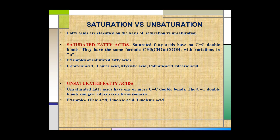On the basis of saturation versus unsaturation, fatty acids are classified into two categories: saturated fatty acids and unsaturated fatty acids. Saturated fatty acids have no double bond in their carbon chain, and examples include caprylic acid, lauric acid, myristic acid, palmitic acid, and stearic acid. Unsaturated fatty acids have one or more carbon-carbon double bonds, which can give either cis or trans isomers. Examples of unsaturated fatty acids are oleic acid, linoleic acid, and linolenic acid.